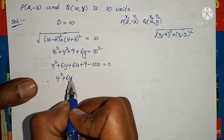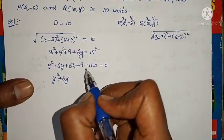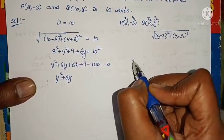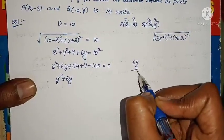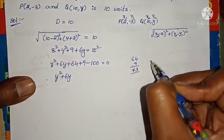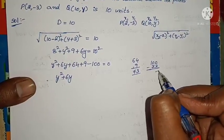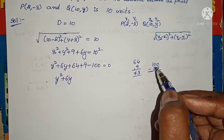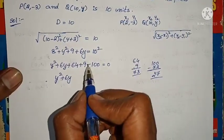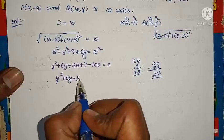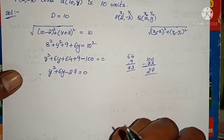Now solve: y squared plus 6y plus 64 plus 9 minus 100 equals 0. 64 plus 9 equals 73. 100 minus 73 equals 27. So we get y squared plus 6y minus 27 equals 0. It is in the form of a quadratic equation.